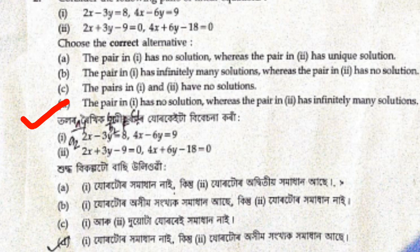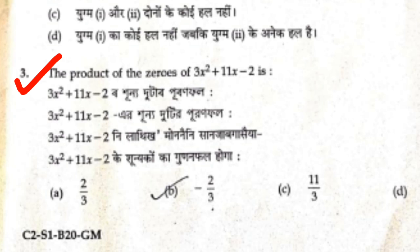This is another question: given 3x squared plus 11x minus 2, the options are A: 2 by 3, B: 2 by 3, C: negative 11 by 3. So the right answer is minus 2 by 3.